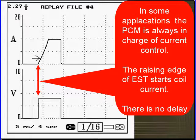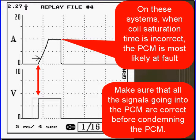In some applications, the PCM is always in charge of the current. The rising edge of EST starts the coil current. You can see it doesn't have that 1.6 millisecond delay. There is no delay on this system. On these systems, when coil saturation time is incorrect, the PCM is most likely at fault. Make sure that all the signals going into the PCM are correct before condemning the PCM.